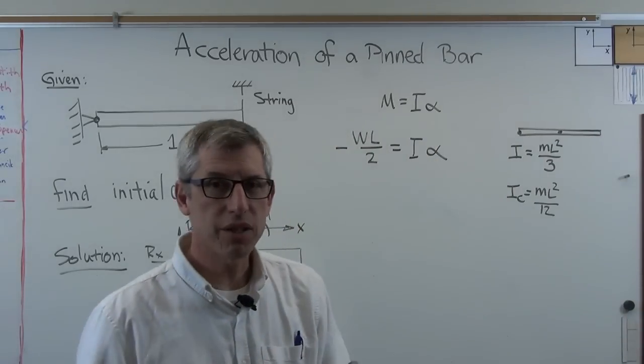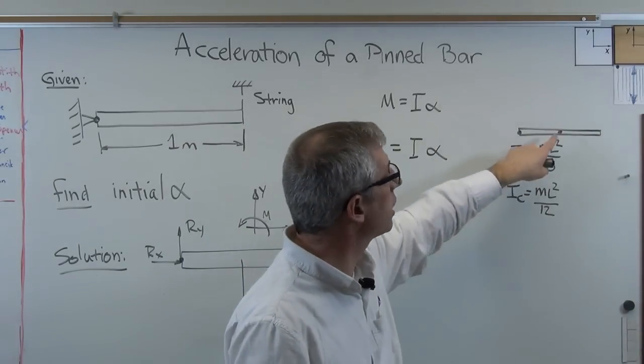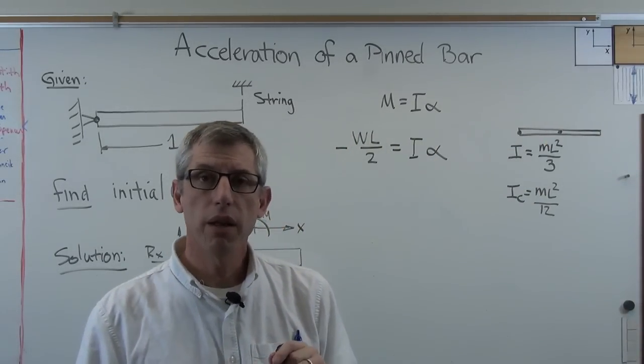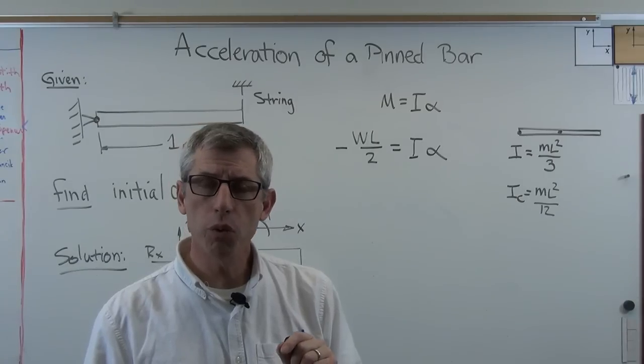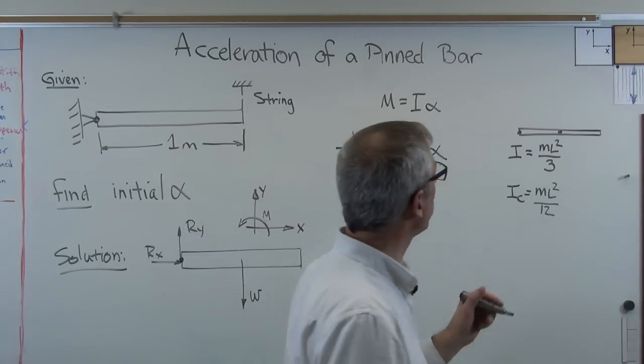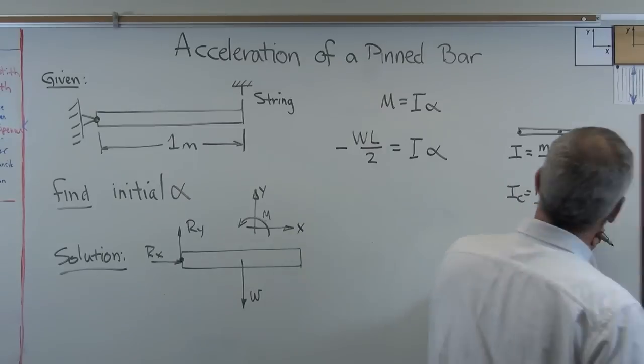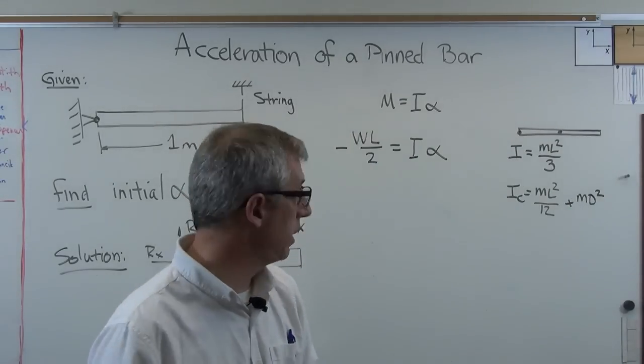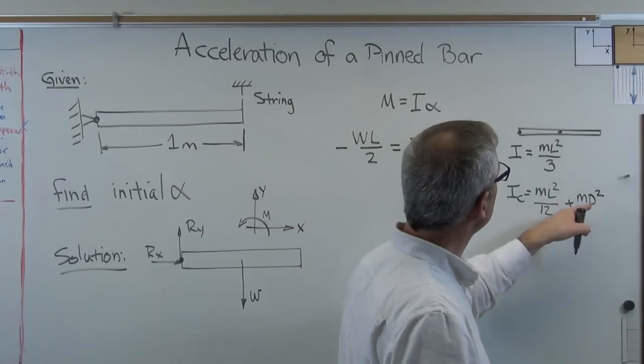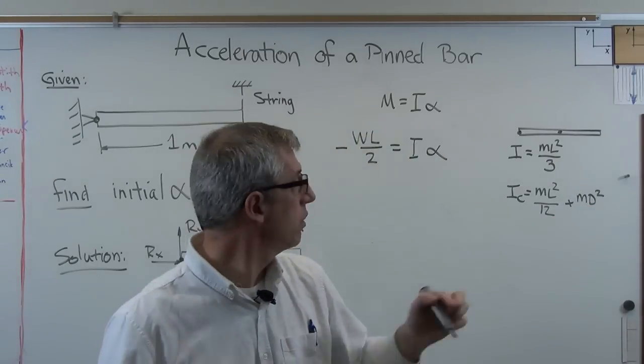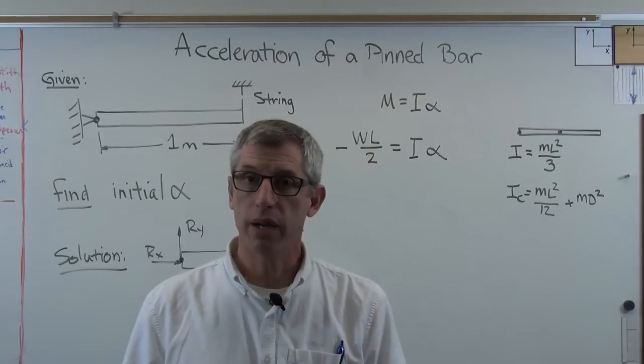That gets us part of the way there, but it isn't the right answer because we haven't accounted for the fact that we're rotating about an end, not the centroid. So what we have to do is write an extra term, md squared. This is the parallel axis theorem in action here, where distance is the distance between the centroid, where this was calculated, and the actual pivot point.